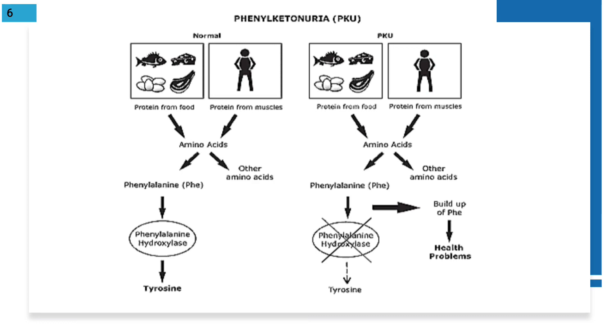In normal metabolism, we take protein from food. Protein also comes from muscle breakdown. The protein is converted into amino acids.